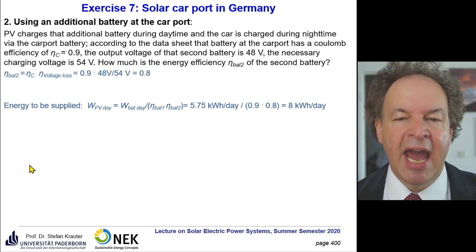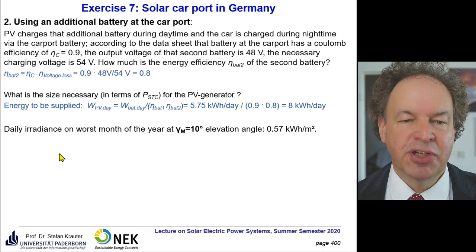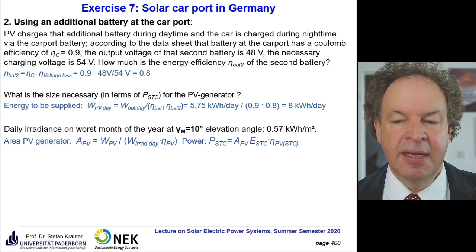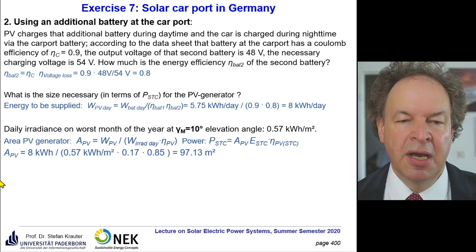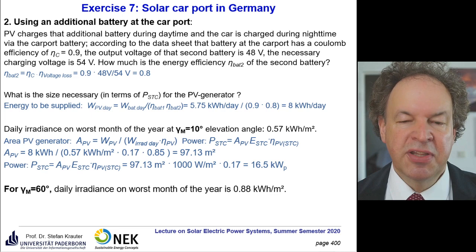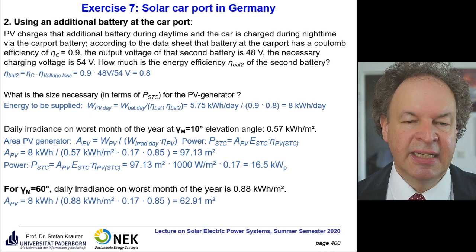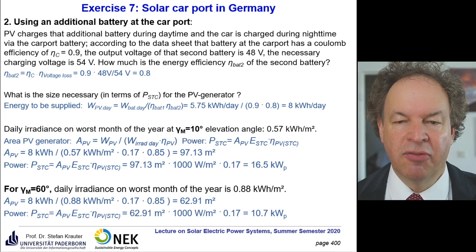For the sizing of the PV generator with the second battery, we apply the formula again. At 10 degrees of elevation angle, with the energy to be supplied of 8 kWh, the same irradiance and efficiency values, we arrive at a necessary area of 97.13 square meters, which is 16.5 kilowatt-peak under standard test conditions. At 60 degrees of elevation, with better irradiance for the worst month, the area is 62.91 square meters and the power under standard test conditions is 10.7 kilowatt-peak.